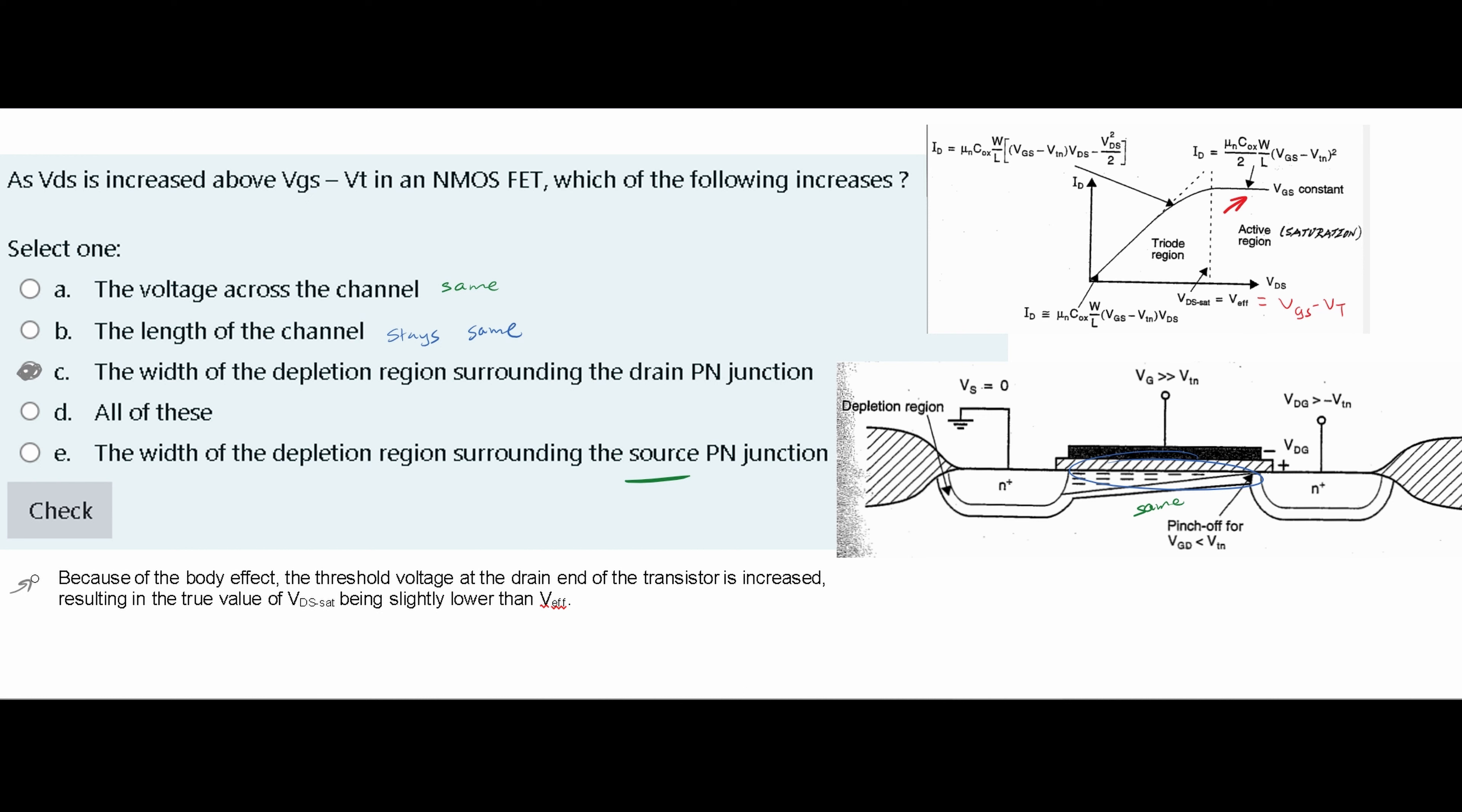Well, the width of our depletion region, because of the body effect, threshold voltage at the drained end of the transistor is increased. And so this is a correct answer.